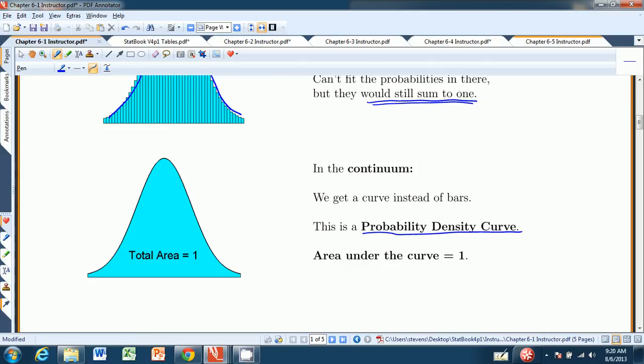And the important thing about this curve, and probability density curves in general, is that the total area under the curve is 1. So that is a requirement of a probability density curve.